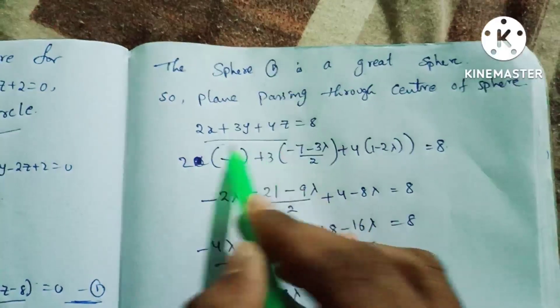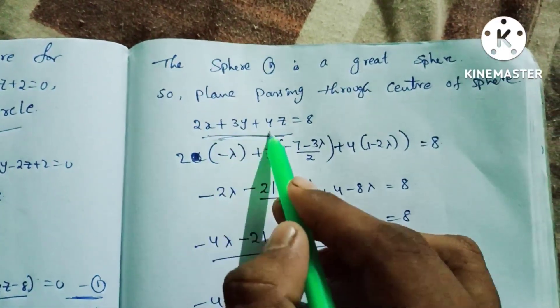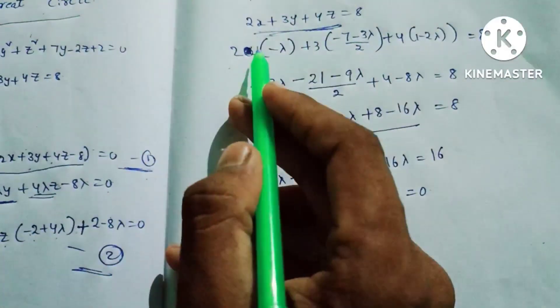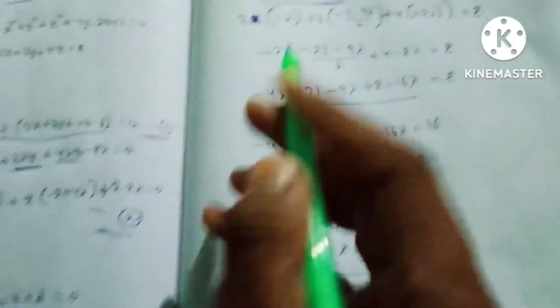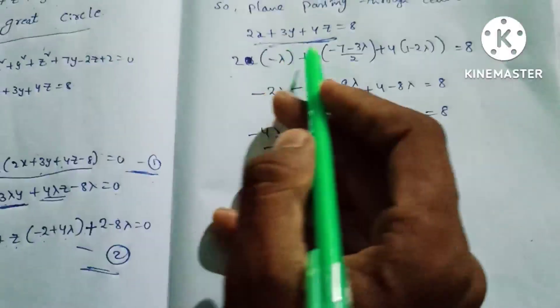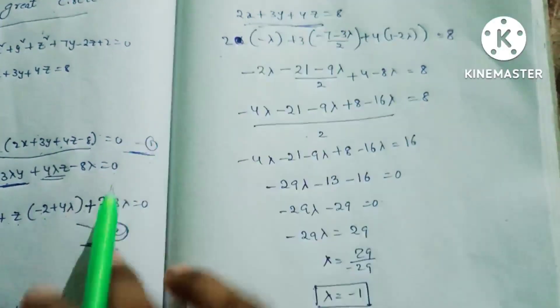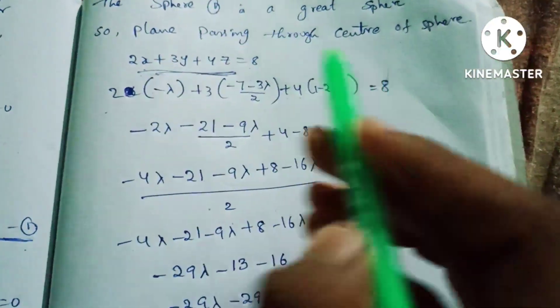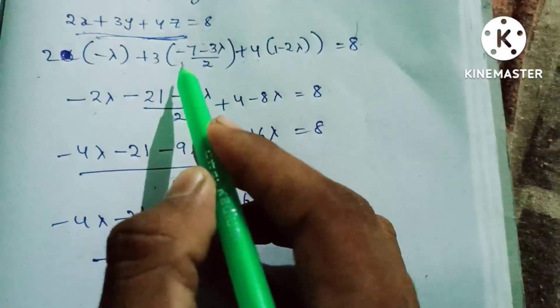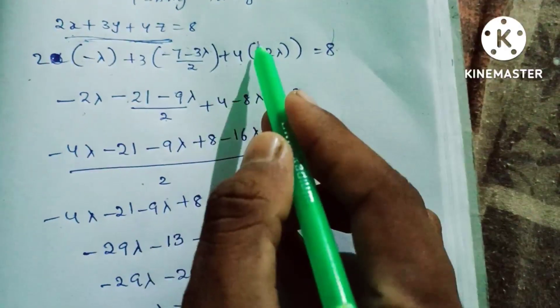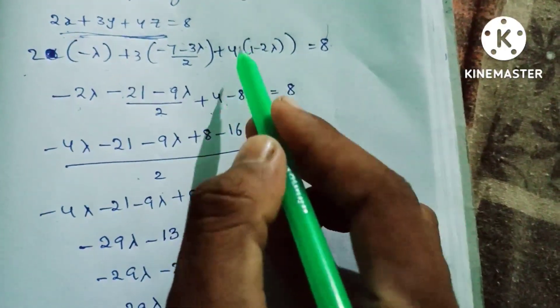Since the center lies on the plane 2x + 3y + 4z = 8, we substitute the center values into the plane equation: 2(-λ) + 3(-(7 + 3λ)/2) + 4(1 - 2λ) = 8. So -2λ - (7 + 3λ)·3/2 + 4 - 8λ = 8.